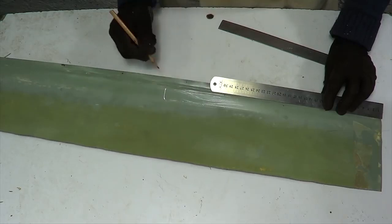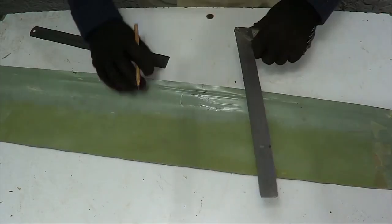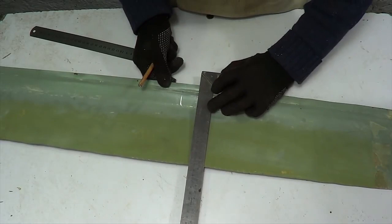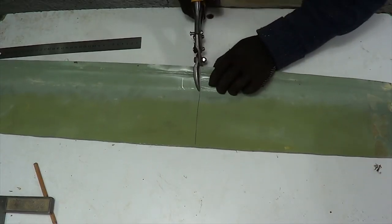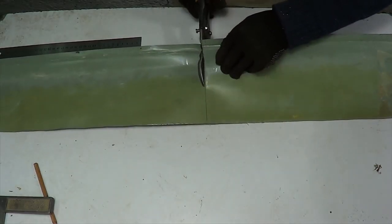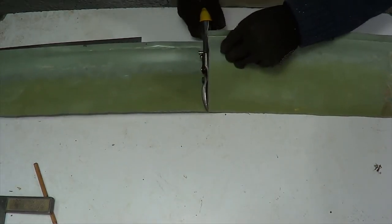First, we measure the distance of 38 cm on the metal and put a mark. We cut off the sheet by this mark with scissors for metal and we make the same second blank.